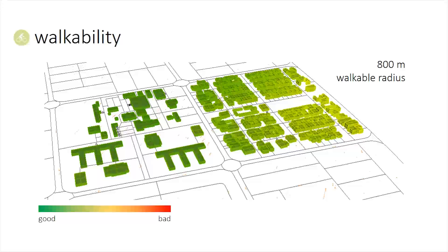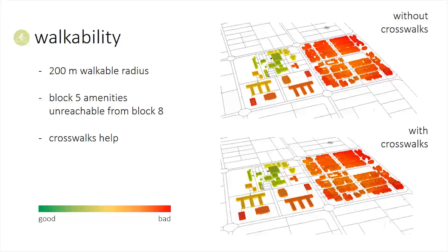We measure walkability using the 2011 version of the walk score metric as published on walkscore.com. Walk scores range from 0, which is bad, to 100, which is good, based on proximity to services and amenities within the neighborhood. A walk score can be calculated for each building by determining paths to various amenities that surround it. The walk score for the neighborhood as is is quite good when judged by an 800 meter walkable radius, typical for the United States. However, based on the climate in Kuwait, we determined that we should use a 200 meter walkable radius, similar to building guidelines in Riyadh, Saudi Arabia. With a 200 meter radius, walk scores are much worse — very few of the amenities are reachable from the residential buildings.